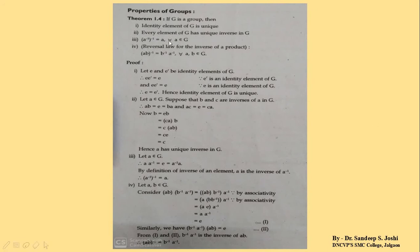Now we start the properties of groups — the theorem part. There are lots of theorems in this chapter. If G is a group, we have to prove: (1) the identity element of G is unique, (2) every element of G has a unique inverse in G, (3) (A inverse) inverse = A for every A in G, and (4) the reversal law: (AB) inverse = B inverse · A inverse.